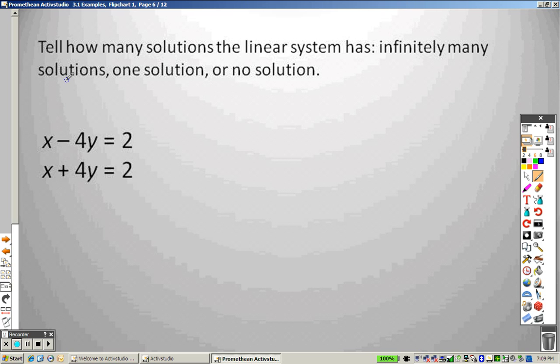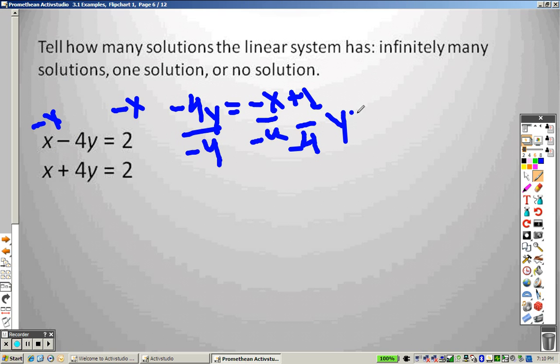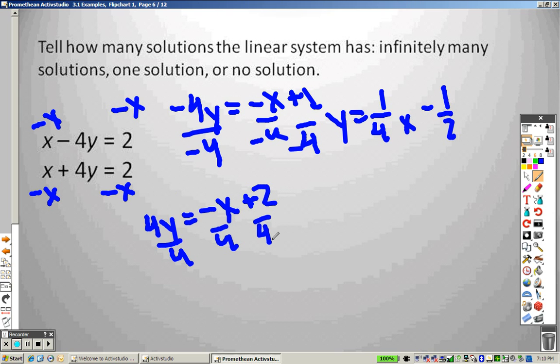Next problem. Doing this, I would subtract x on both sides. So I get negative 4y equals negative x plus 2. I divide both sides by negative 4. And just like the last problem, I get y equals 1 fourth x minus 1 half. Okay. Subtract x on both sides. And when I do so, I end up getting 4y equals negative x plus 2. I divide by 4.